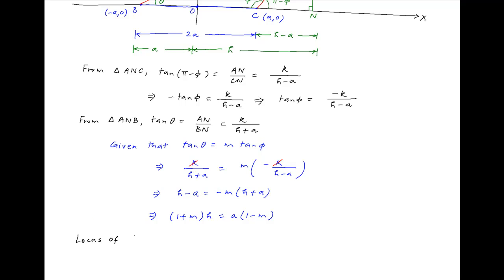Now the locus of point A with coordinates (H, K) can be obtained by replacing H with X and K with Y.